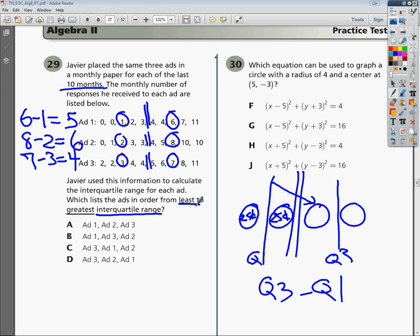They want least to greatest, so ad three goes first. My second one would be the five, so that's ad one. And then my final one would be ad two. I'm looking for the one that shows ad three, ad one, and ad two. So my correct answer is C.